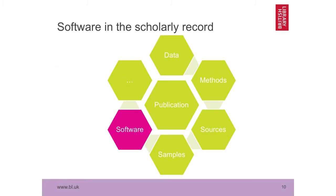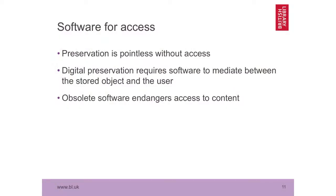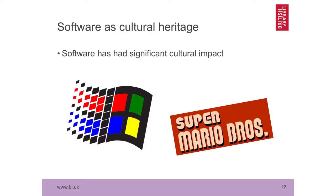We're increasingly thinking of data, methods, sources, samples, and software all as important information that orbits around the publication, which is still the first-class output of research. Software is also necessary for access — preservation is pointless without access. If you're keeping stuff that no one can look at, you're really wasting your time and money. Digital preservation requires software to mediate between those bits on the disk and the person who wants to interpret that information. And if the software required to access that information becomes obsolete and you don't have a copy of it, you've lost access to the content as well. Thirdly, software is interesting as a cultural heritage object in its own right — it's had a massive impact on the development of the 21st century and recent 20th century, so it's worth preserving.